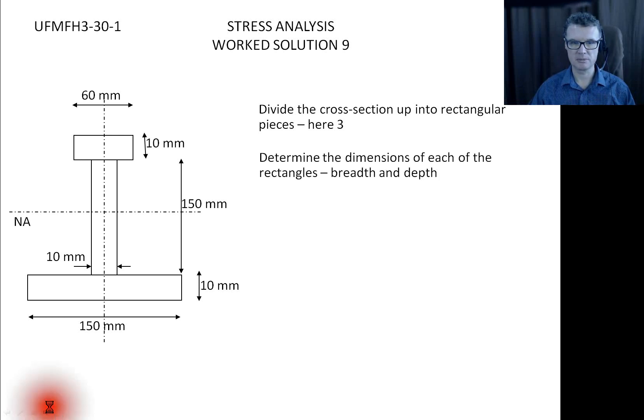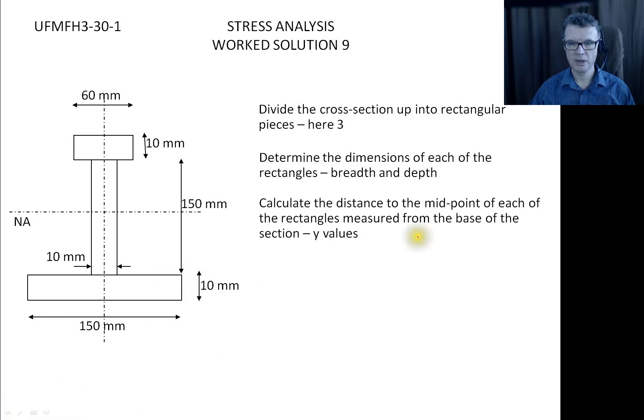So we've divided up into three sections, we label up our dimensions for each section. We're going to be looking for a breadth and for a depth each time. Find the midpoints for each of them, so this one will be half its depth, this one here would take these two heights and then half its depth.